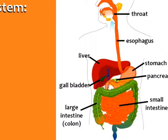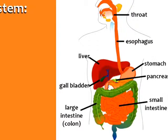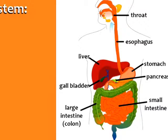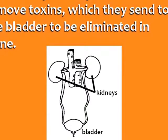The pancreas produces hormones and enzymes. The liver has a variety of functions. The gallbladder stores a substance that helps in digestion. Your kidneys filter your blood and remove toxins, which they send to the bladder to be eliminated in urine.